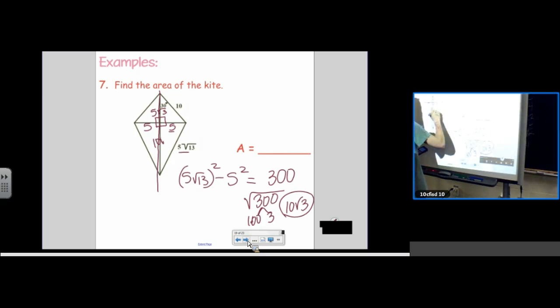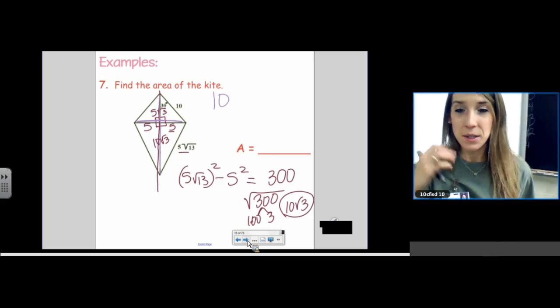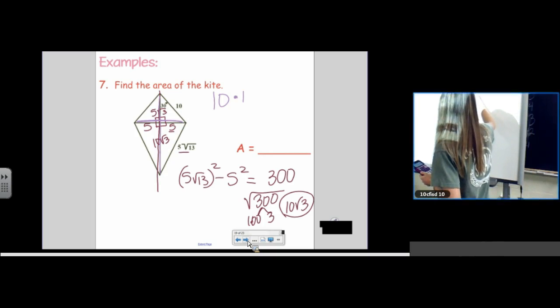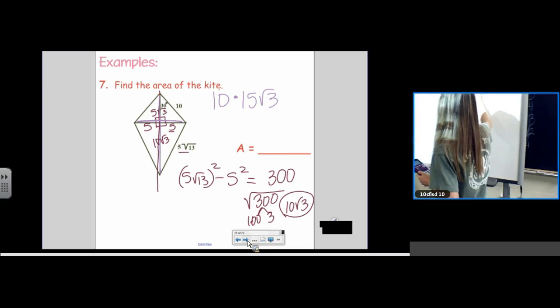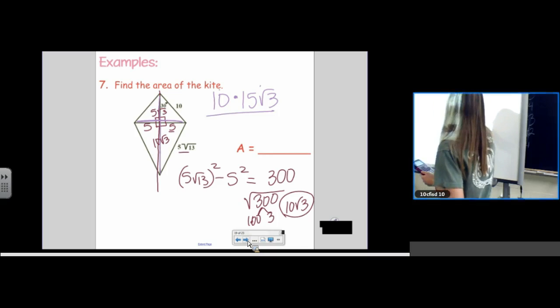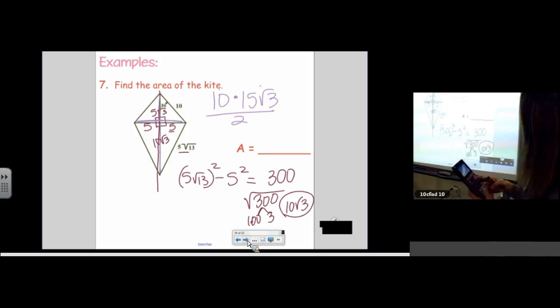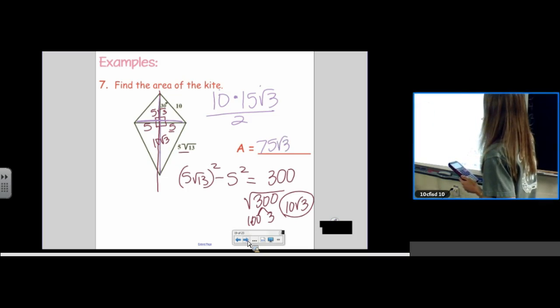Okay. Area. Here we go. Diagonal 1 times. Oh, good. Look what they did. These are like terms. So, I can add 5 root 3 and 10 root 3 to get 15 root 3 for diagonal 2. So, diagonal 1 times diagonal 2 divided by 2. Not quite as bad as we thought. 75 root 3. No units again.